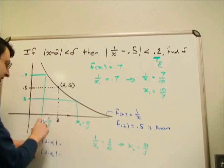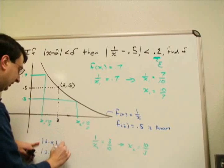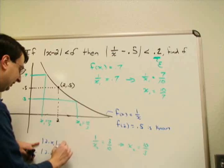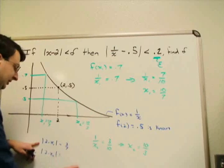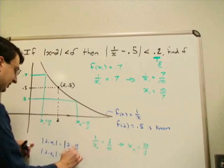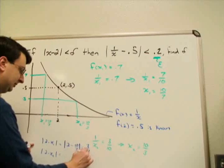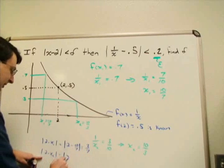So |2 - x1| is |2 - 10/7|. If we simplify that, that should be 4/7. Not to skip the work here: we have 2 minus 10/7, so that's 14/7 minus 10/7.